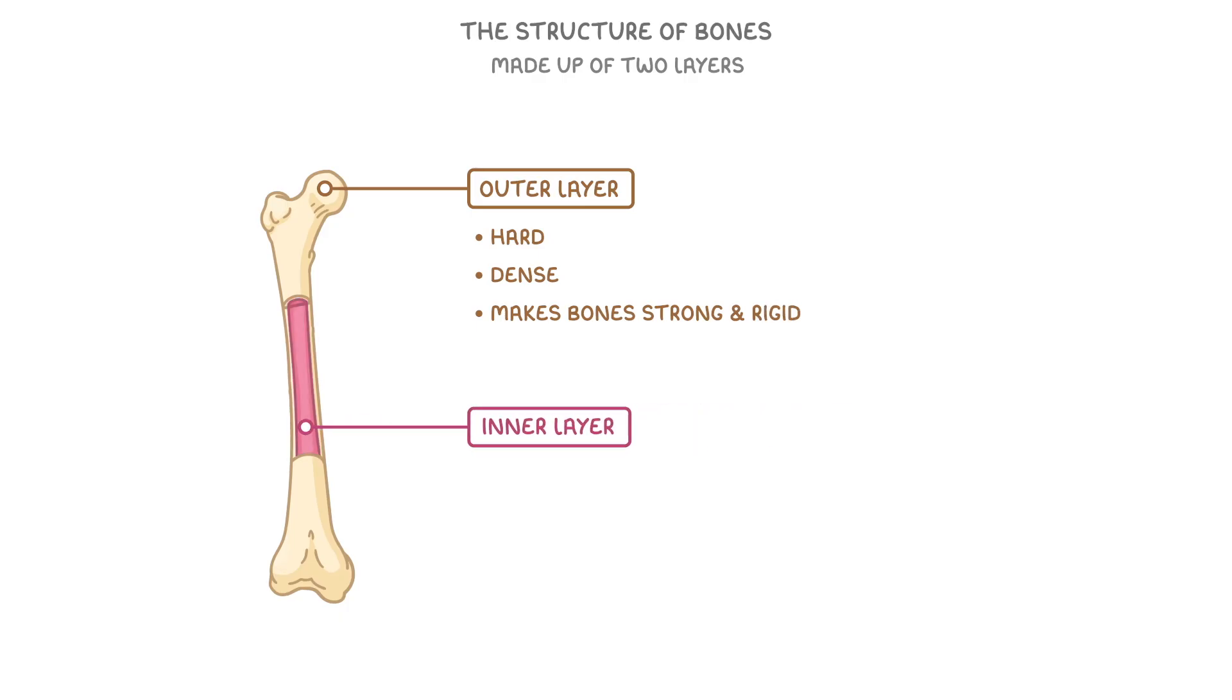This part in pink is the inner layer. The inner layer is made up of spongy tissue which has lots of gaps in it that make the inner layer a lot lighter than the outer layer. However, it is still really strong. The inner layer also contains bone marrow which we'll learn about in more detail later on in the video.